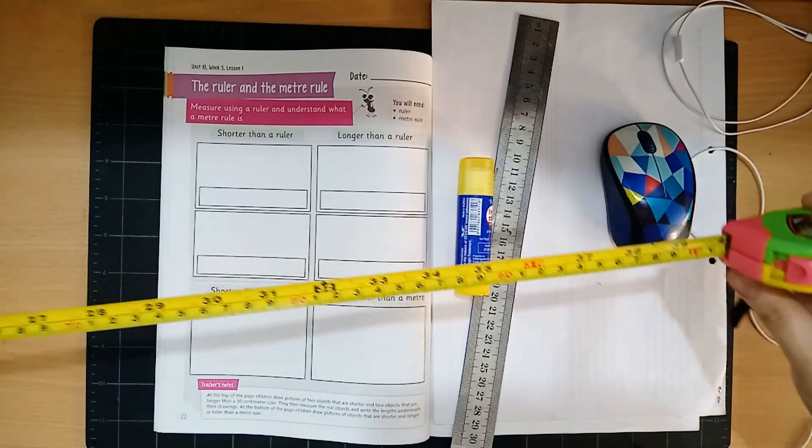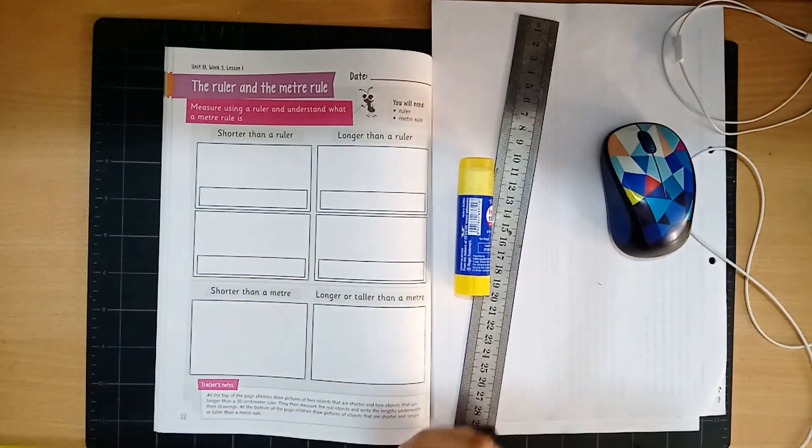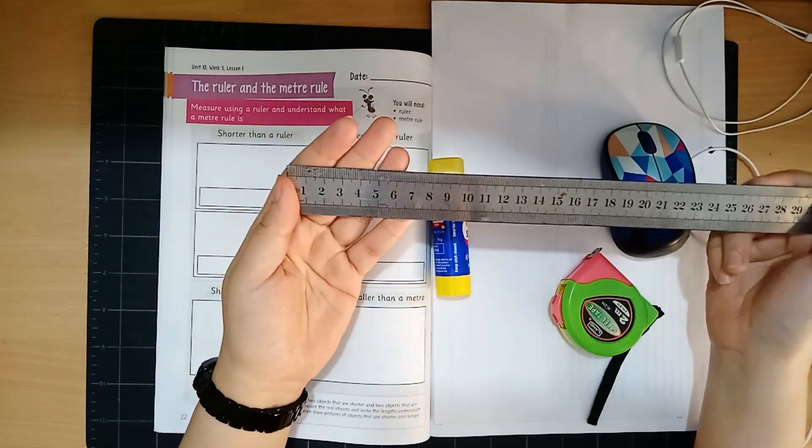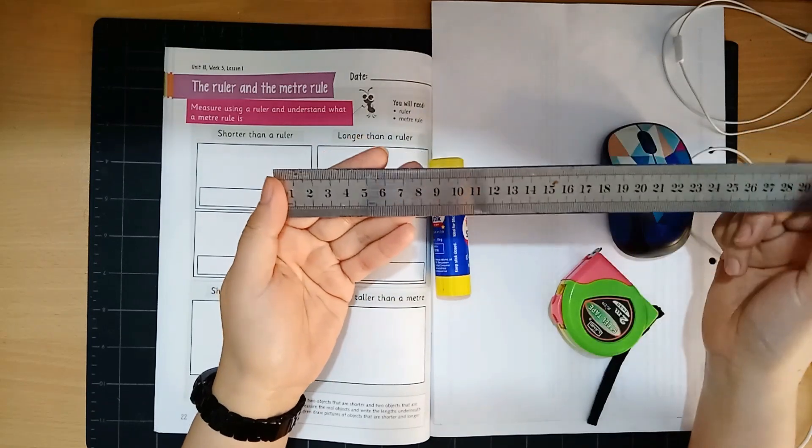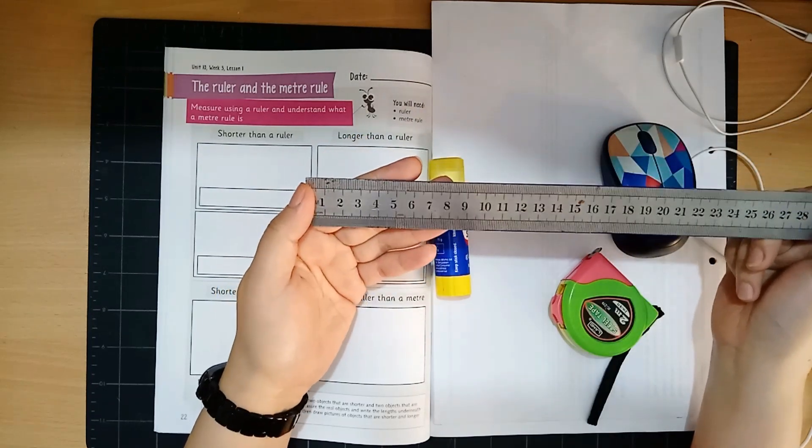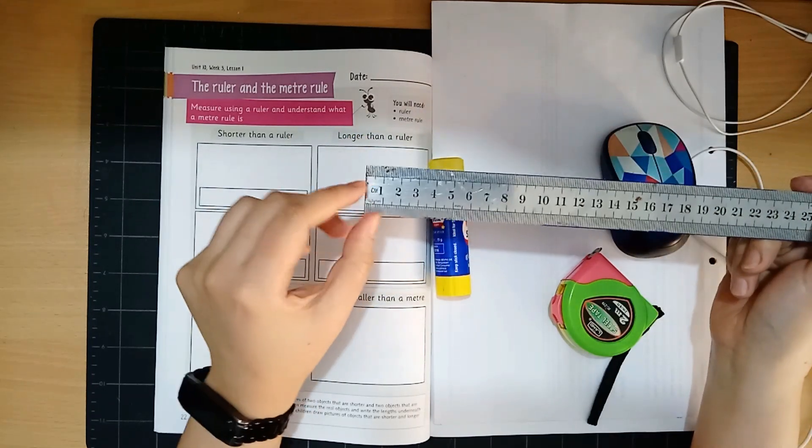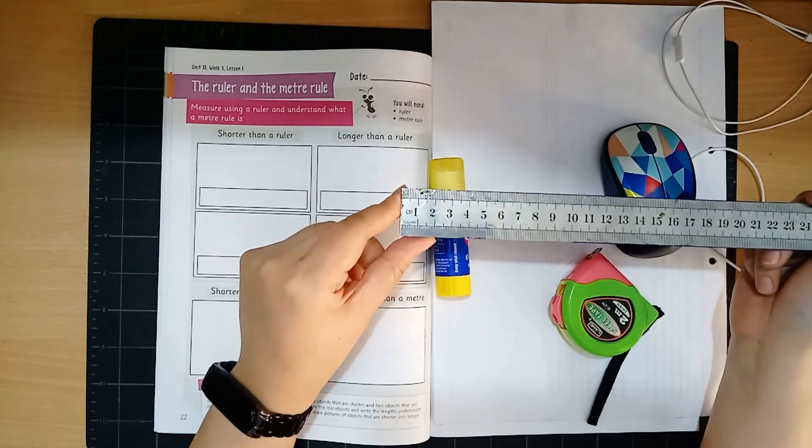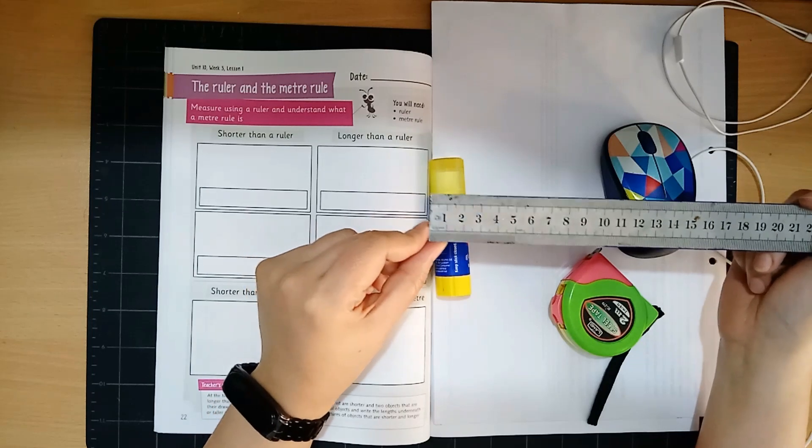Okay, so today we will start by using the ruler first. This is my ruler at home and probably yours is going to be shorter or a little bit longer than mine but they're all the same. They come in centimeters or inches. Today we're going to do centimeters the way that we have practiced at school.